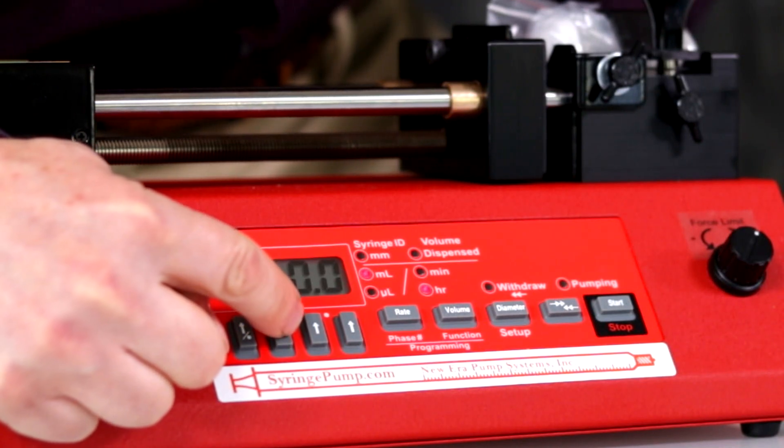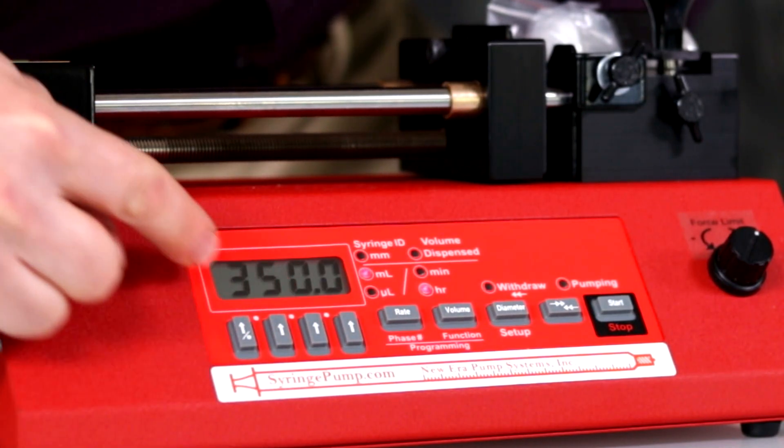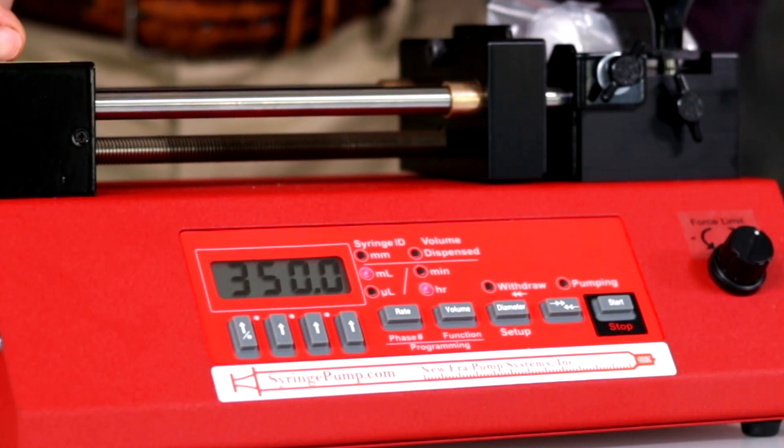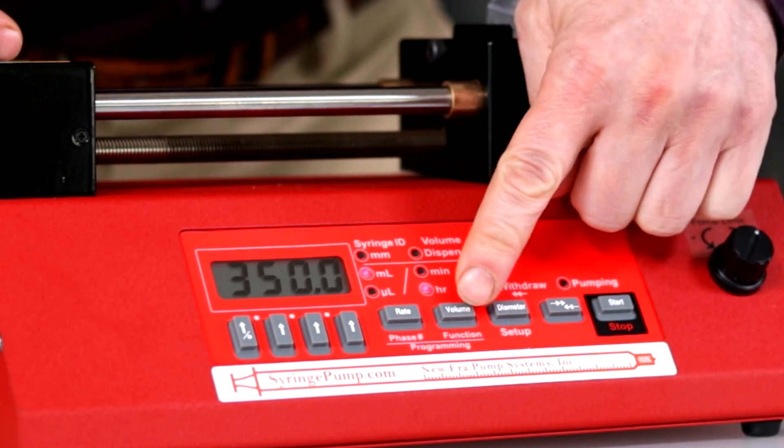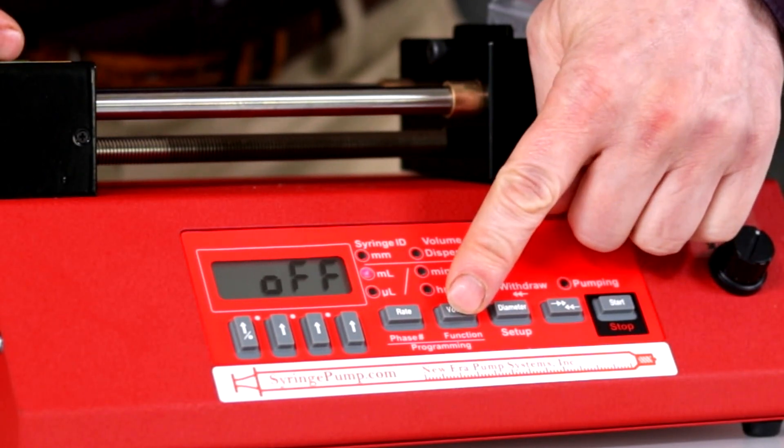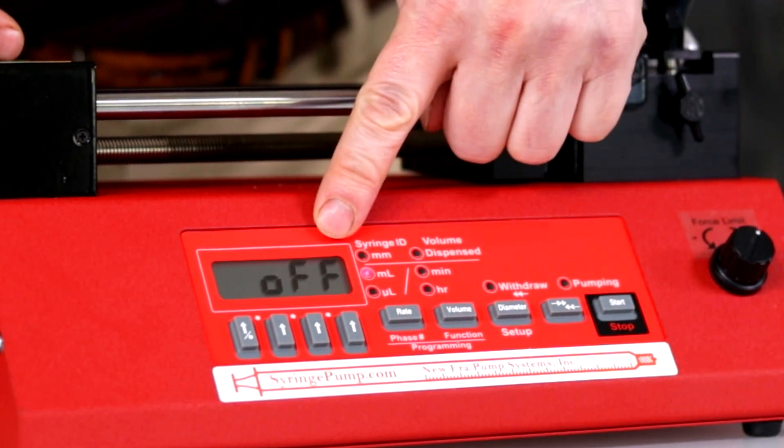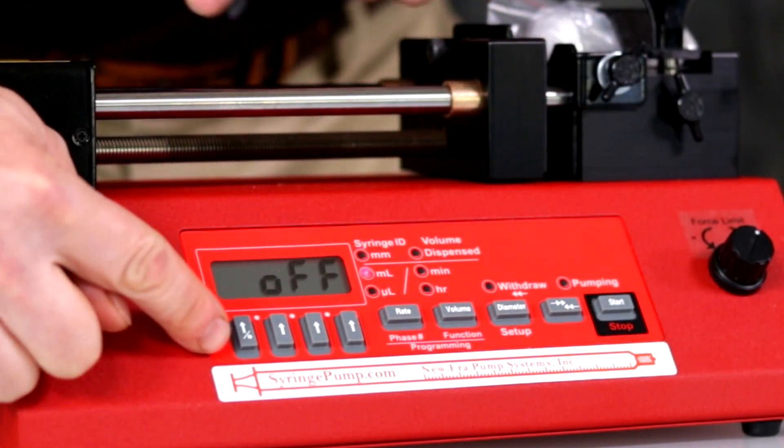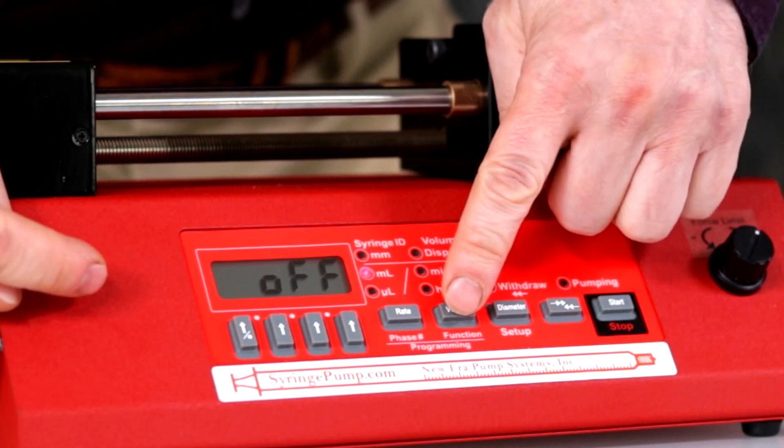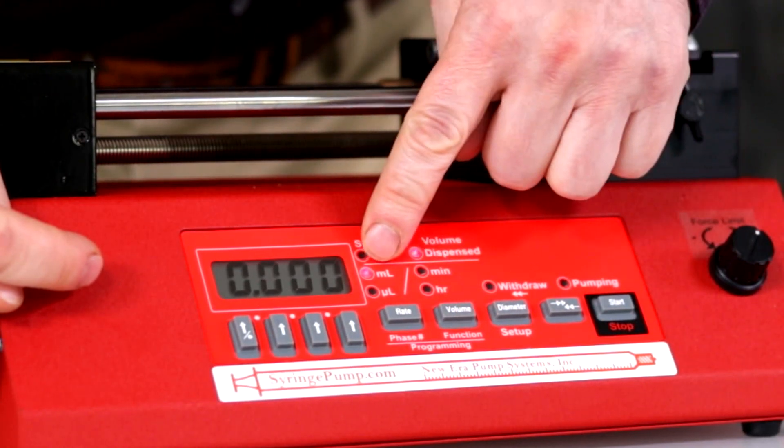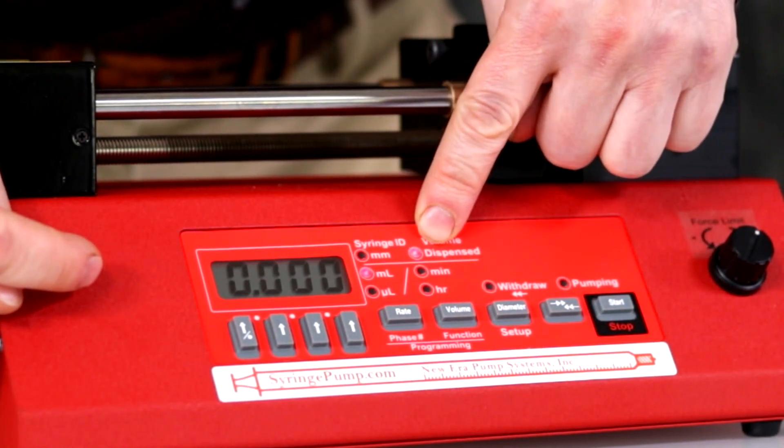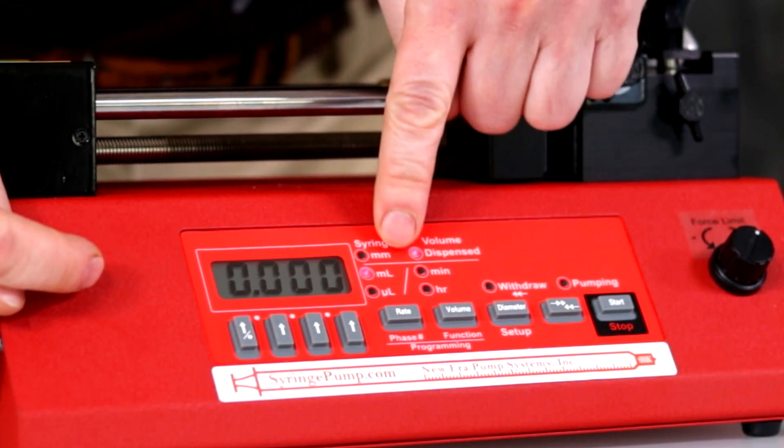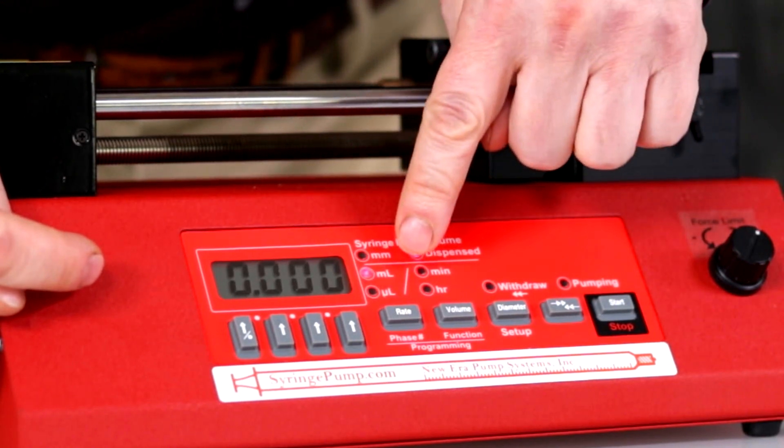Press the volume key to show the volume target off, indicating continuous pumping. Press the volume key to set a volume target. Pressing the volume key again shows the volume dispensed, which is zero. You can change the units used by the pump from milliliters to microliters. We will pump in milliliters with continuous pumping off.